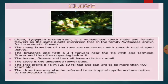The many branches of the tree are semi-erect with smooth oval-shaped leaves. The branches end with 3 to 4 flowers near the tip, with one terminal flower and the others opening below it. The leaves, flowers, and bark all have a distinct smell. The clove is the unopened flower bud.